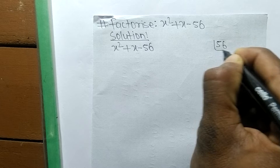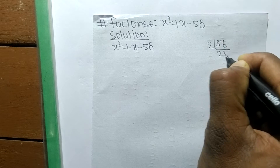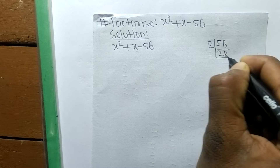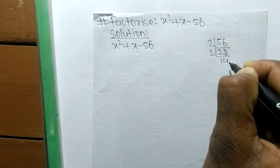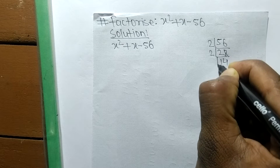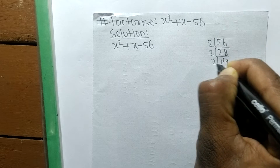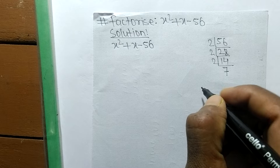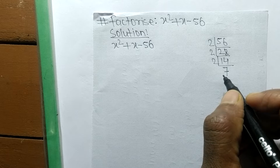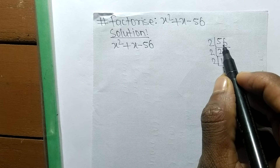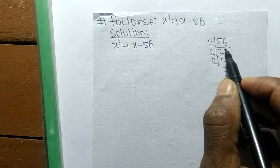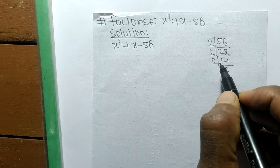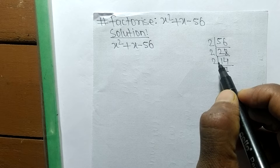So 2 times 28 means 56, 2 times 14 means 28, and 2 times 7 means 14. We got the prime factors of 56, and by multiplying within these numbers we have to find out a suitable pair.